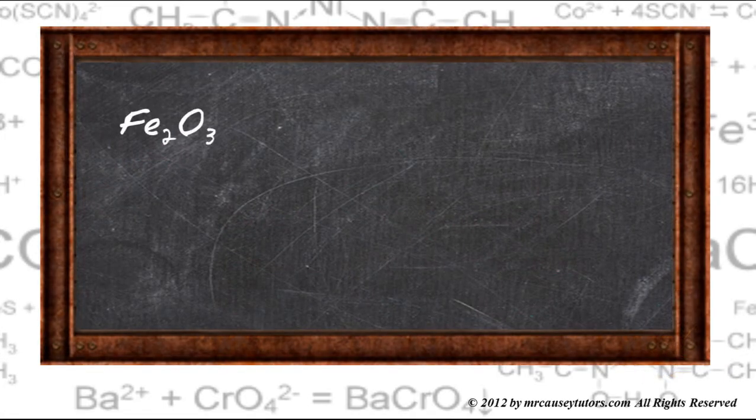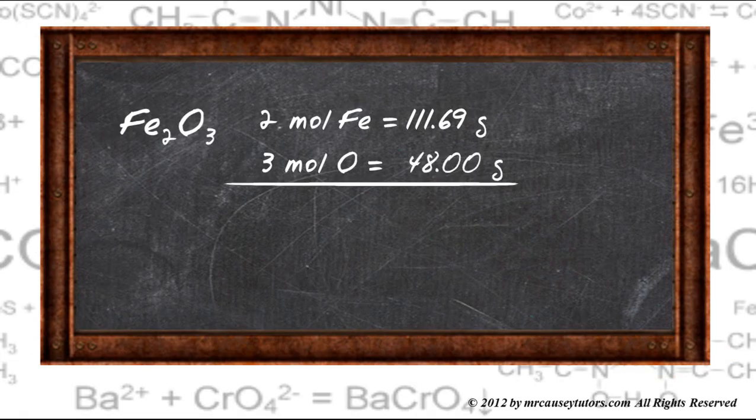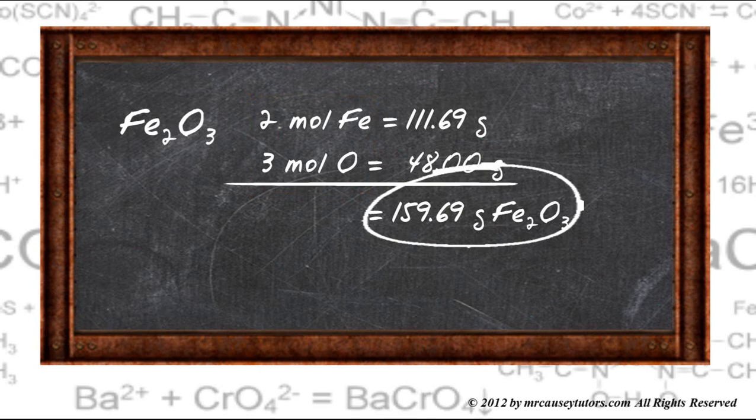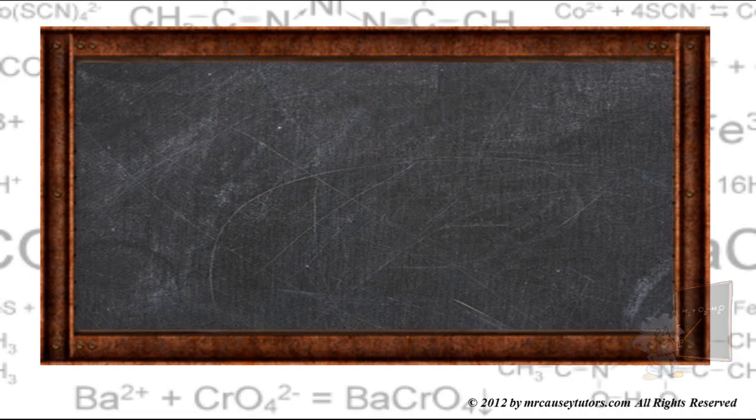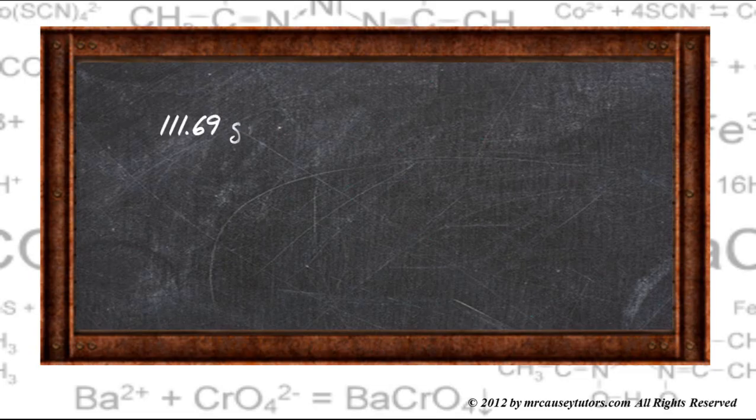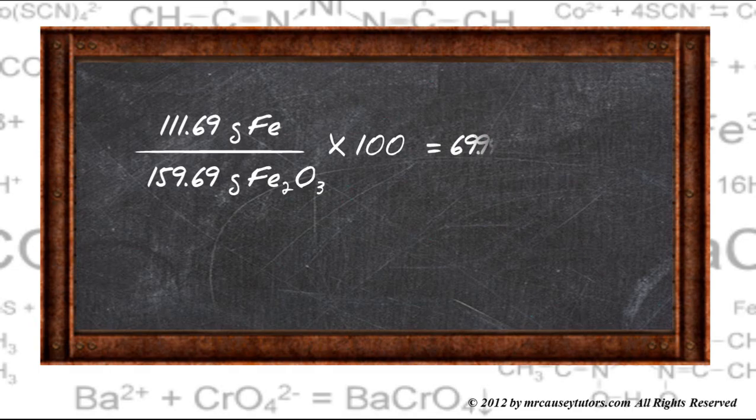First thing is taking iron three oxide and determining the mole amounts. There's two moles of iron and three moles of oxygen, and add those together. And there we go. There's our molar mass of iron three oxide, and we want to compare it to the moles iron. And there's two moles of iron in there, so we want to make sure that we use that number. And we take the part, divide it by the whole, times 100, and it's 69.94 percent iron.